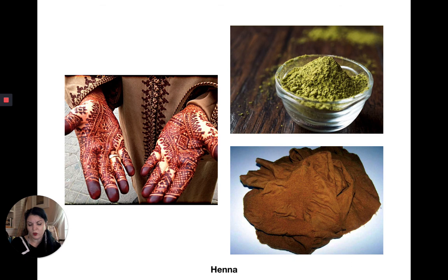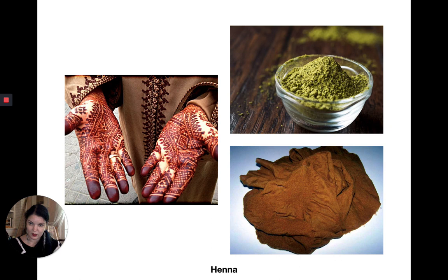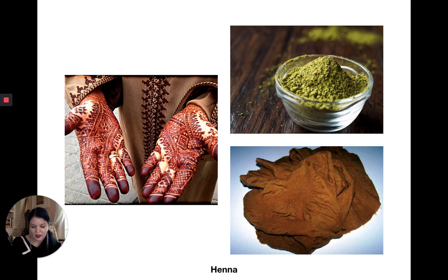The earliest written record of its use is from the legend of Baal of the Ugaritic people, written on a tablet from 2100 BC found in present-day Syria. Henna was also used extensively in ancient southern China, mostly for dyeing leather. In the fourth and fifth centuries, henna use in the Deccan of western India is illustrated on bodhisattvas and deities in cave paintings at Ajanta and in Sri Lanka. So it also has a history associated with religious practices in India as well.